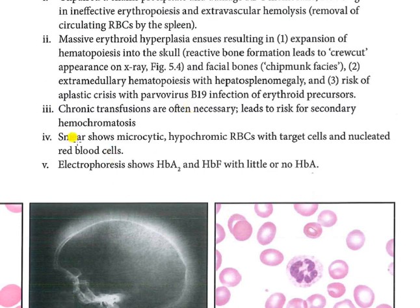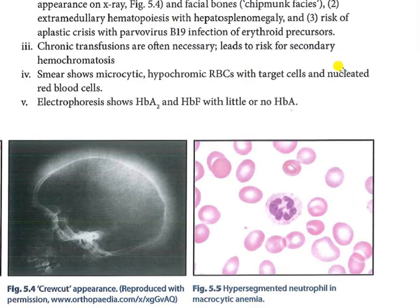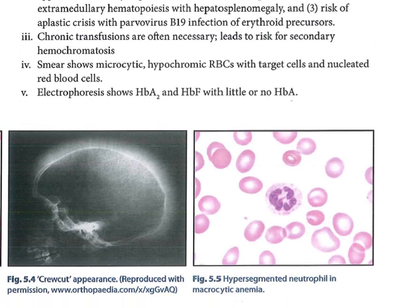The blood smear shows microcytic hypochromic RBCs with target cells. The cells precipitate because hemoglobin is insufficient. There are also nucleated RBCs. Hemoglobin electrophoresis shows raised HbA2 and HbF with little or no HbA in beta thalassemia major. In beta thalassemia minor, HbA2 is raised. In summary, beta thalassemia presents as microcytic anemia — and this concludes our discussion of microcytic anemias.